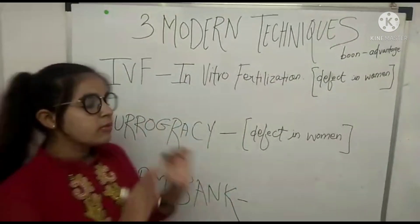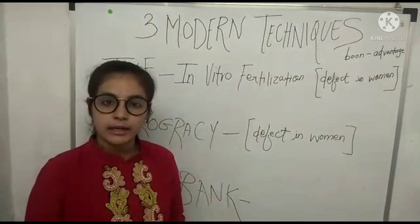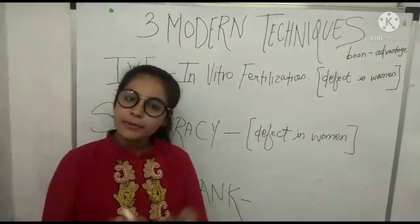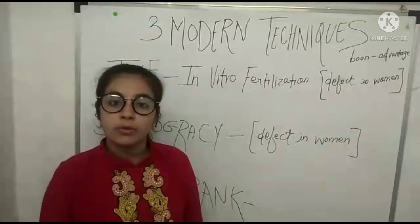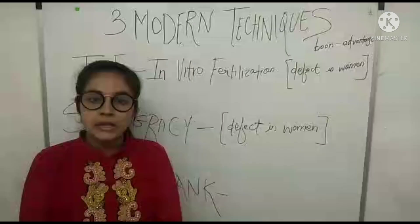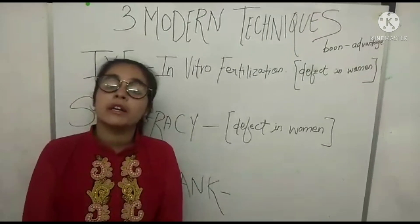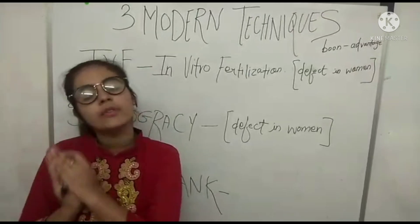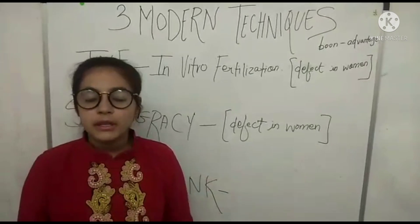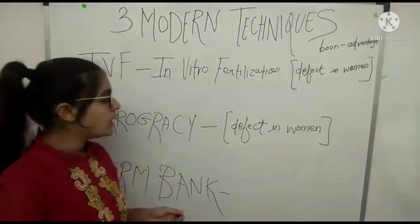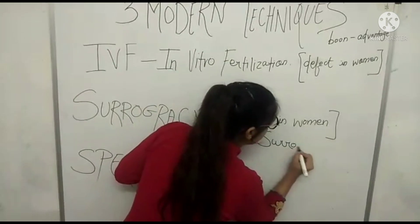In surrogacy, the sperms of the father and the oocytes of the mother are collected and fertilized in a test tube. But they are implanted in the uterus of a normal woman — the embryo is implanted in another woman who has a normal uterus. The mother who carries the baby for nine months is called the surrogate mother.